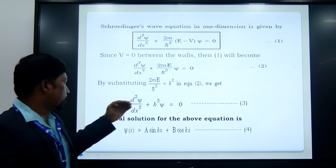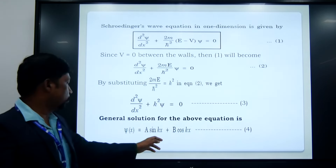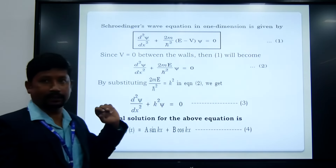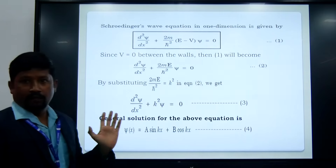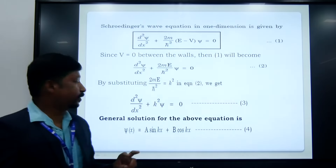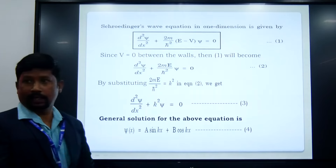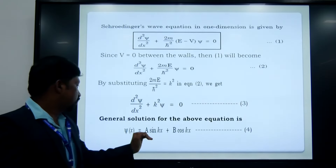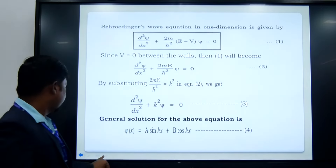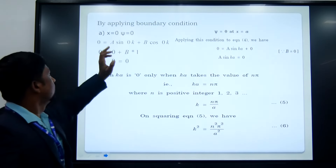The general solution for the above equation is ψ(x) is equal to A sin(kx) plus B cos(kx). We are having only one particle but we get two terms here. Our duty is to find which term the particle is present in, and by applying boundary conditions, we can determine that.